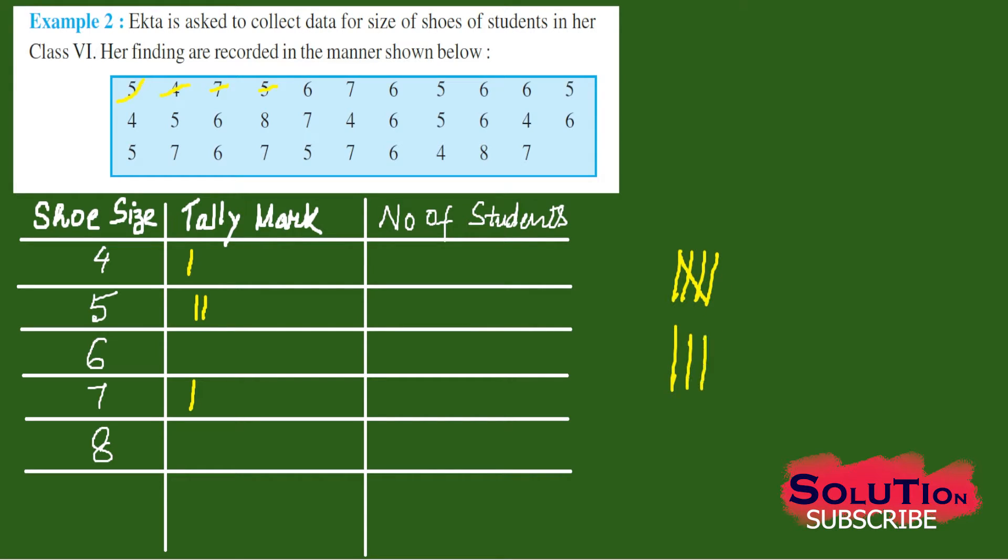So this is our 5. So every time I will be writing 1, 2, 3, 4 and then 5 I will be cutting like this. Then 6, 7, 8, 9, 10 for 10 I will be cutting like this. So this is how we will be doing.